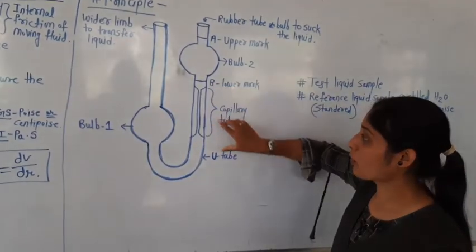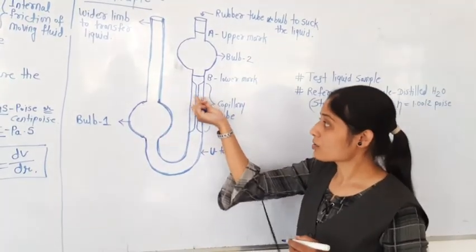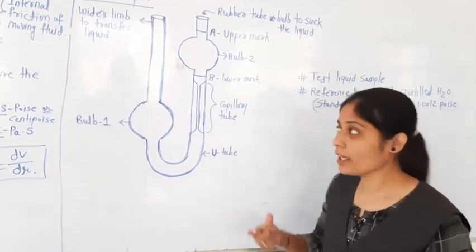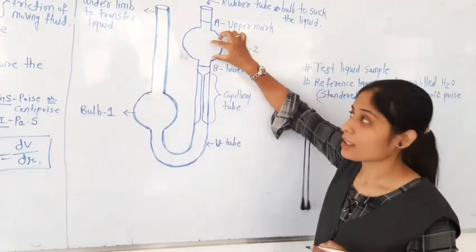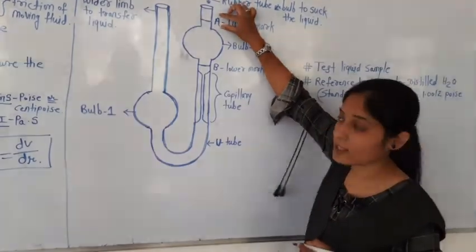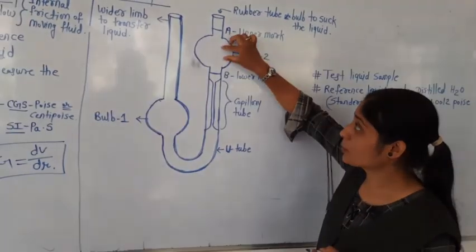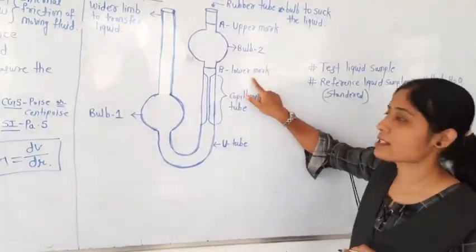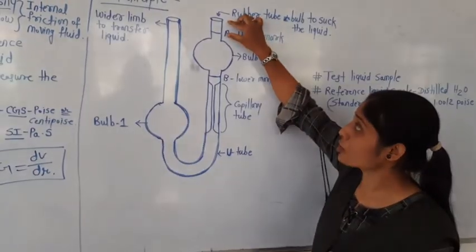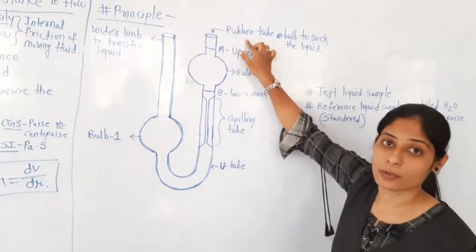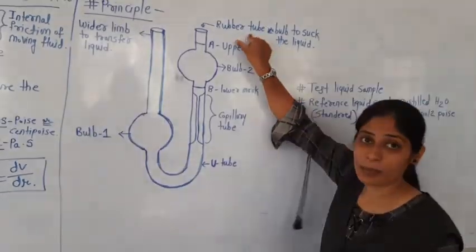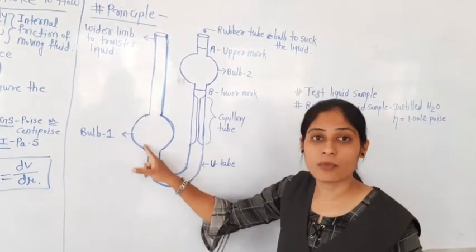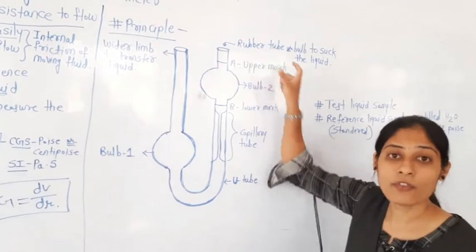After the U-tube, this portion is called the capillary tube. In the Ostwald viscometer, a capillary tube is present, so it is also called the capillary viscometer. Above the capillary tube, a small bulb 2 is present. This bulb contains two marks: the A mark above and the B mark below. A mark is the upper mark and B mark is the lower mark. Above this portion, we attach a rubber bulb or rubber tube to suck the liquid from bulb 1 into bulb 2.